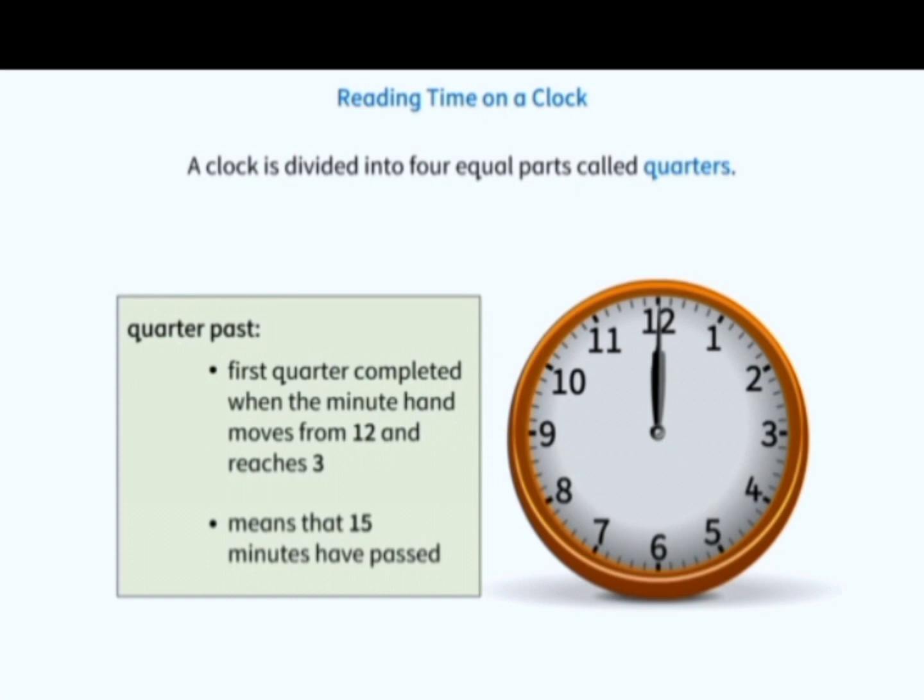The clock is divided into 4 equal parts called quarters. The first quarter is completed when the minute hand moves from 12 and reaches 3. It is called quarter past, which means that 15 minutes have passed.